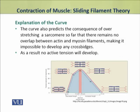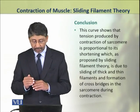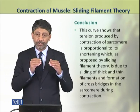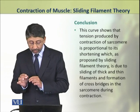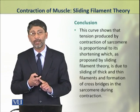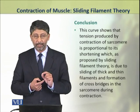This curve also predicts a consequence of over-stretching of a sarcomere so far that there remains no overlap between the actin and myosin filaments — there will be no possibility to form any cross bridges, so no active tension will develop. This curve shows that the tension produced by the contraction of a sarcomere is proportional to its shortening, which according to the sliding filament theory is due to sliding of thick and thin filaments and formation of cross bridges in the sarcomere during contraction.